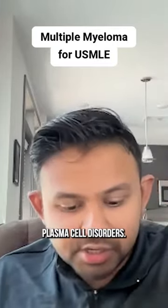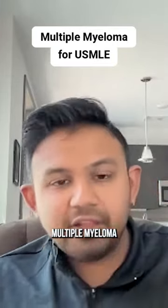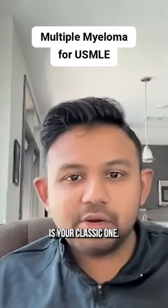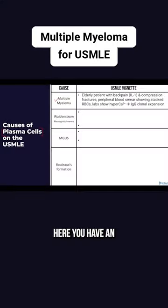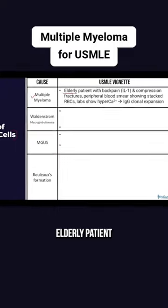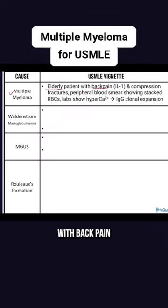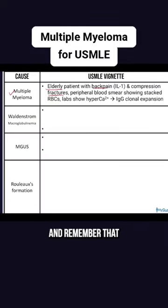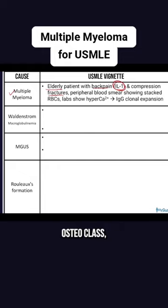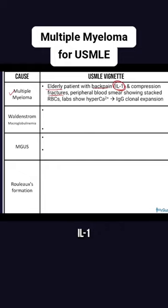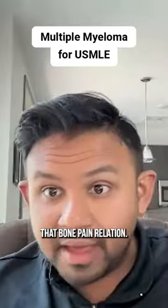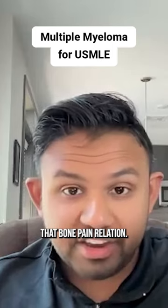Plasma cell disorders — multiple myeloma is your classic one. Here you have an elderly patient with back pain and compression fractures. Remember that when you are activating osteoclasts, you're going to be thinking of IL-1 and that bone pain relation.